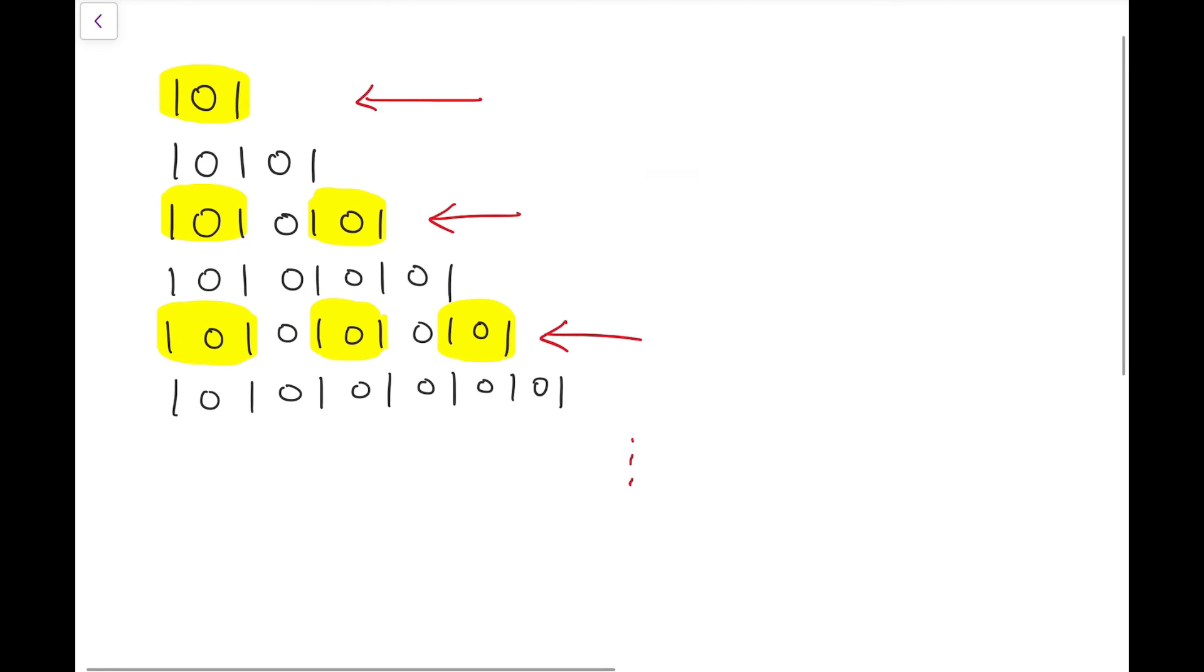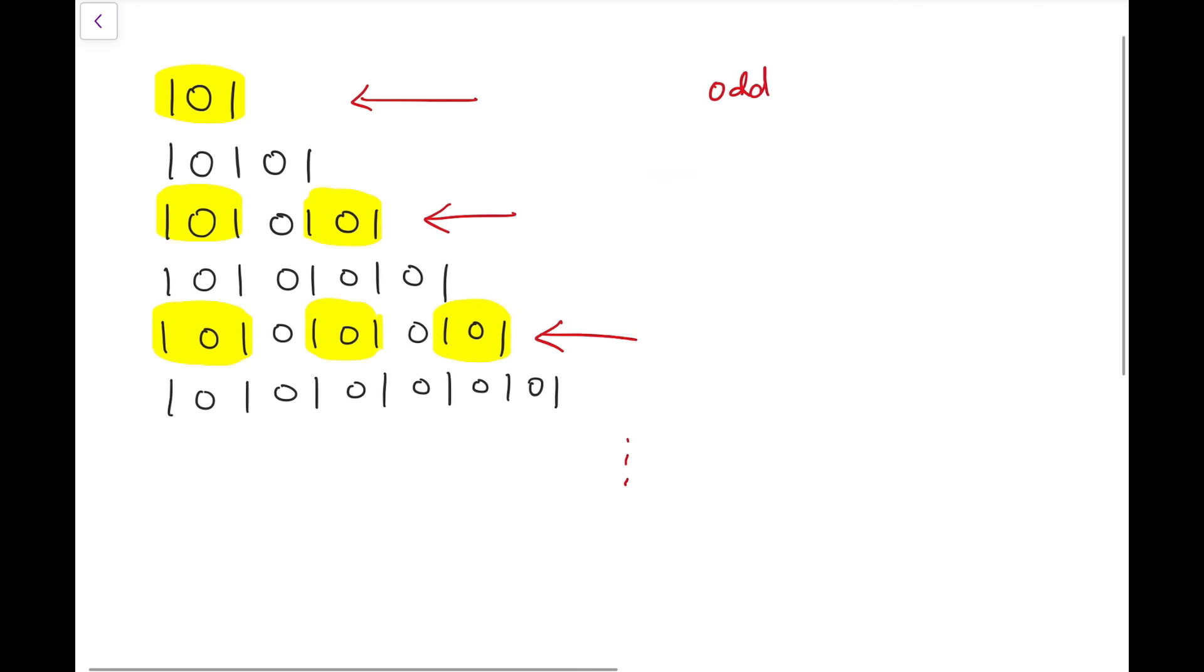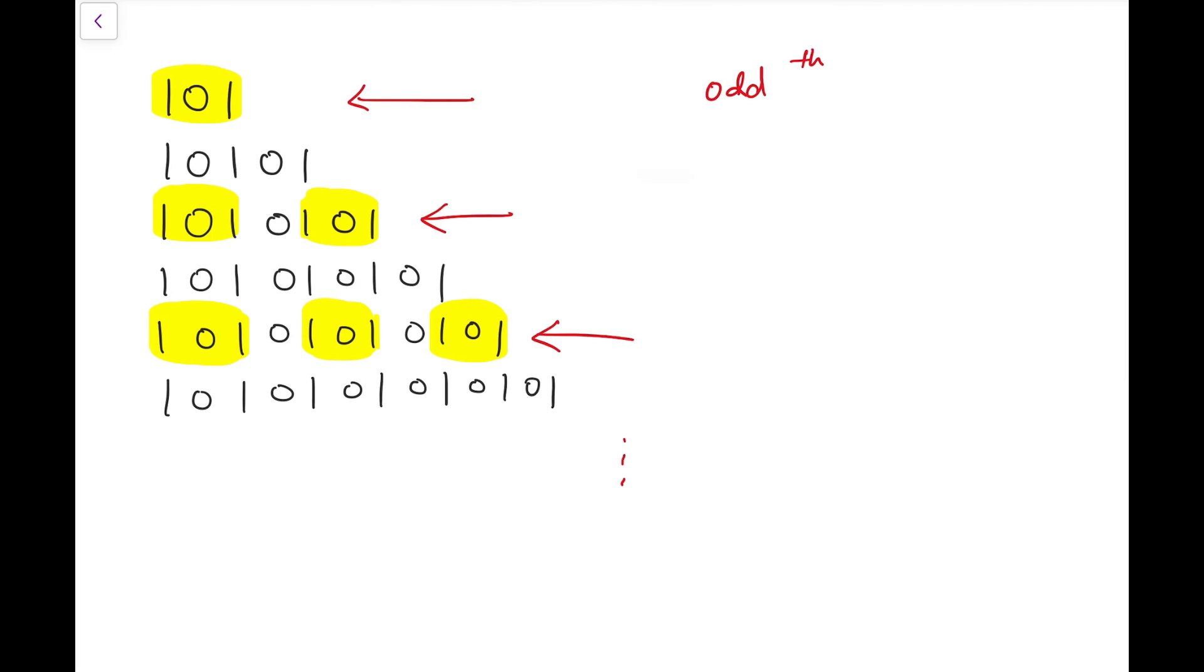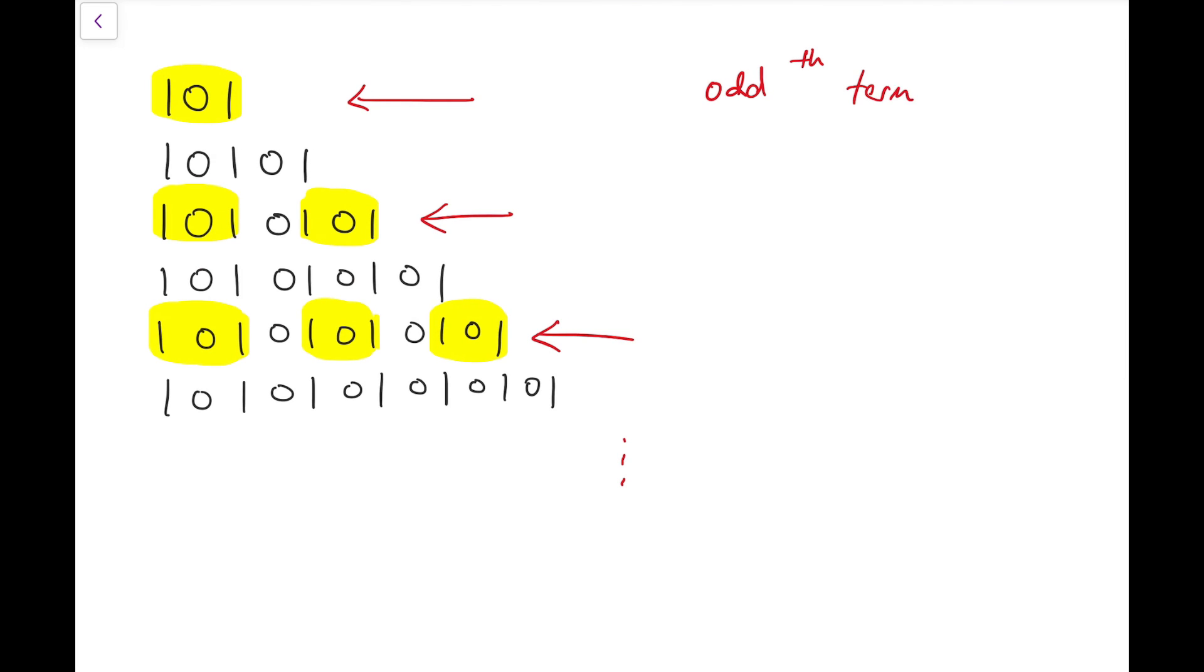And so we'll get a bunch of 101, so that means for odd terms, they are all multiples of 101.